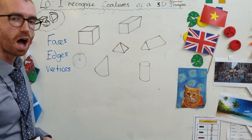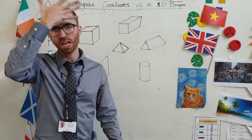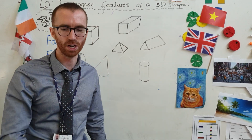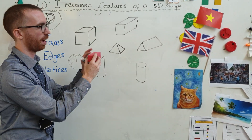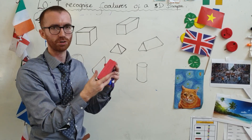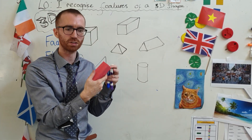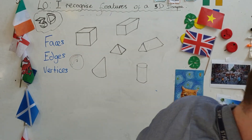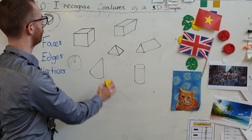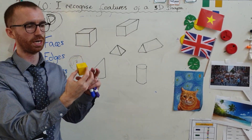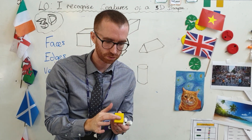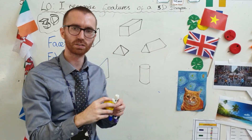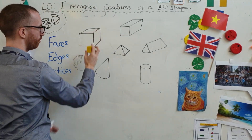A face, as you can imagine, is this kind of big area. Think about your face — it's a big area. On a 3D shape, we're talking about a big area. So, how many faces does a 3D shape have? Different 3D shapes have different numbers of faces. Let's get a cube — this here is a face. 1, 2, 3, 4, 5, 6. The cube has 6 faces.